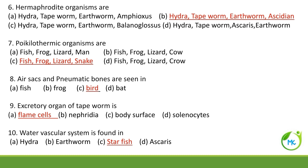Poikilothermic organisms — as already mentioned, except aves and mammals, all other organisms are poikilotherms. So in the options, option C — fish, frog, lizard, snake — are poikilothermic organisms.